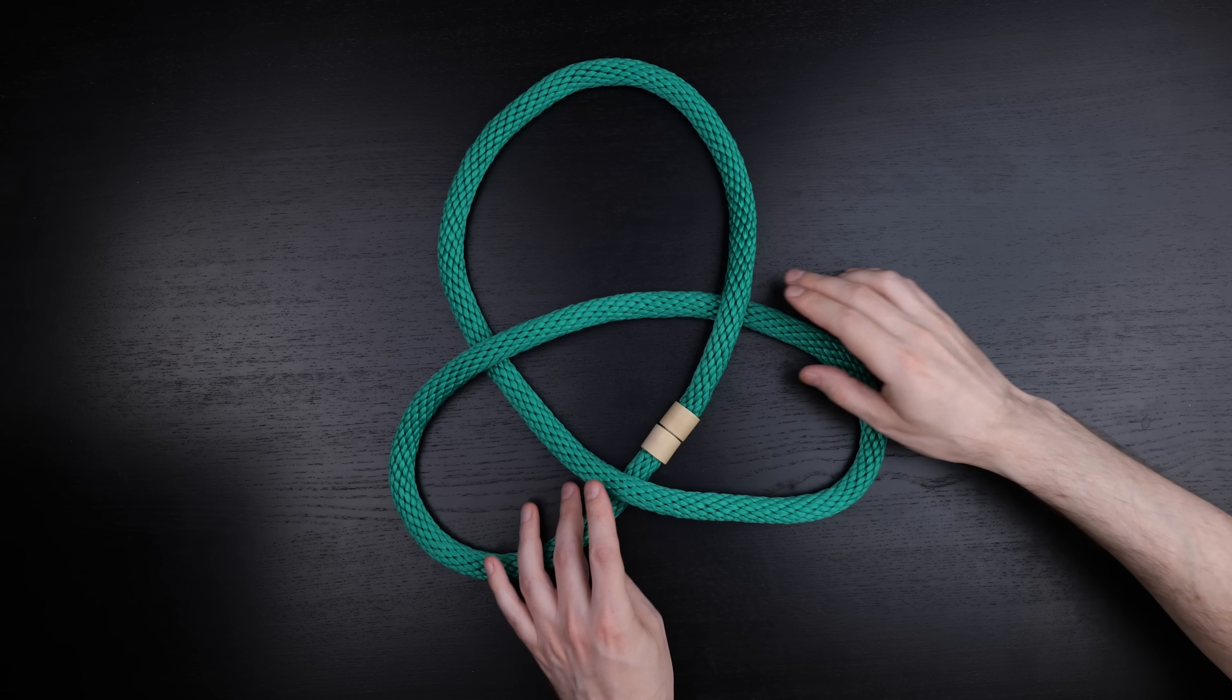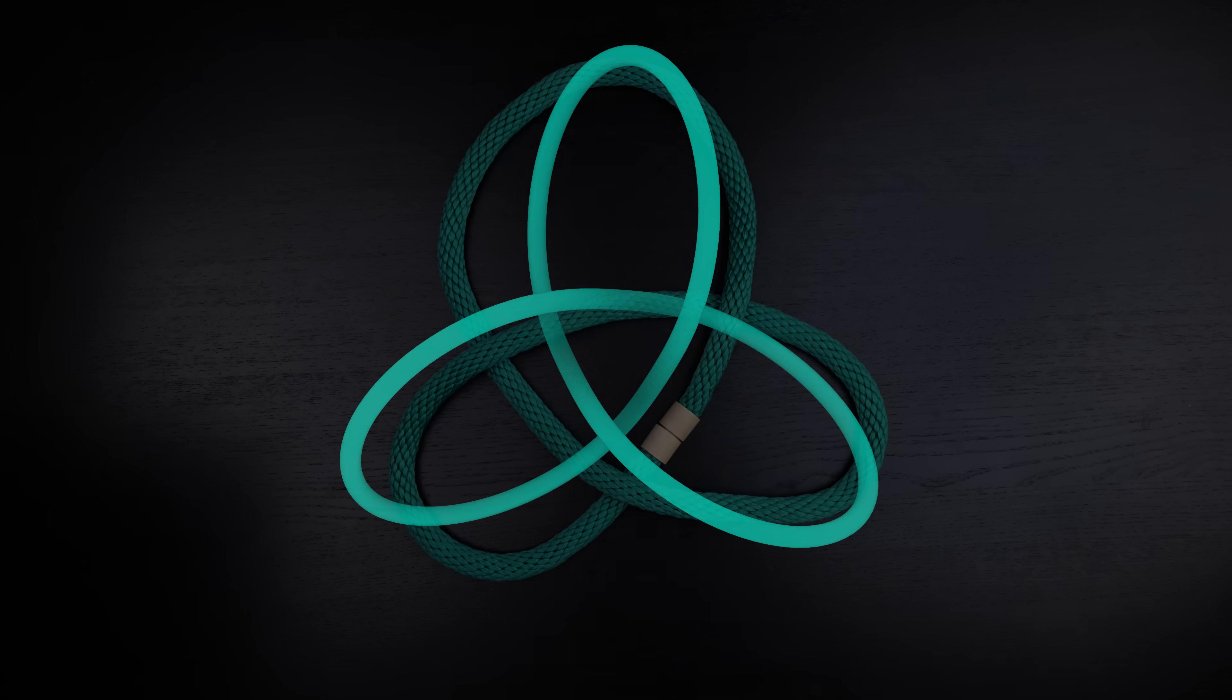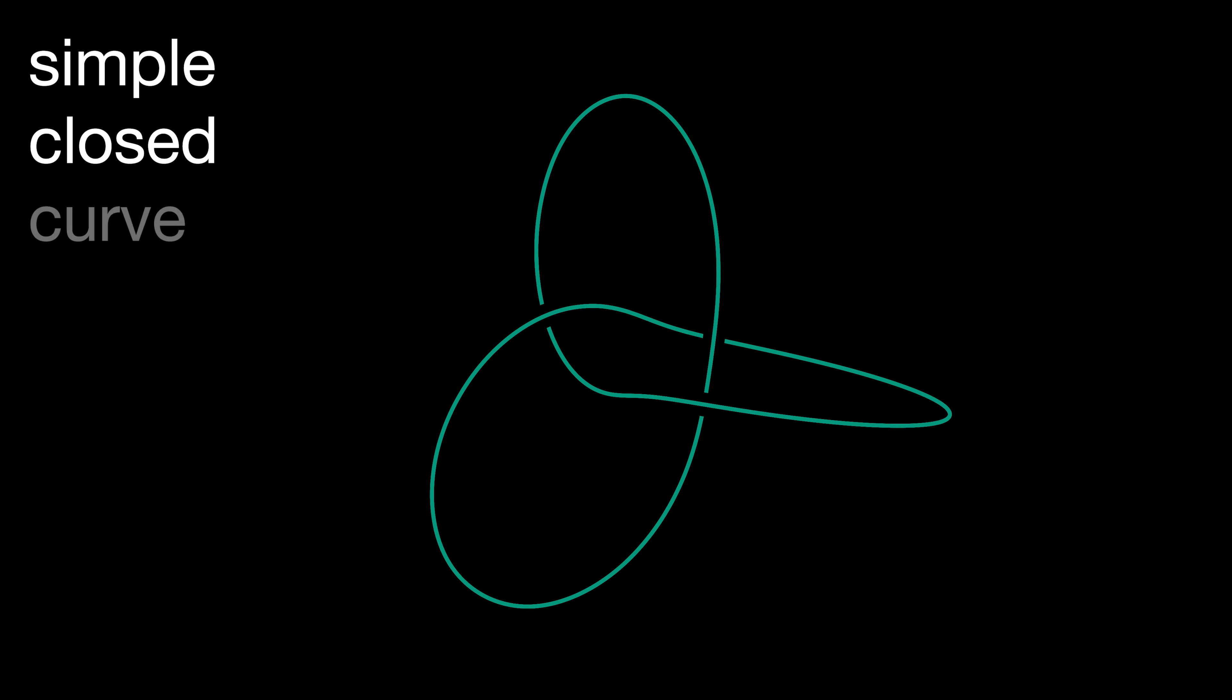Okay, there were some other differences as well. Mathematical knots don't usually have any thickness. Unlike a real piece of string or 3D prints, it should be infinitely thin. More precisely, a mathematical knot is a simple closed curve in space.